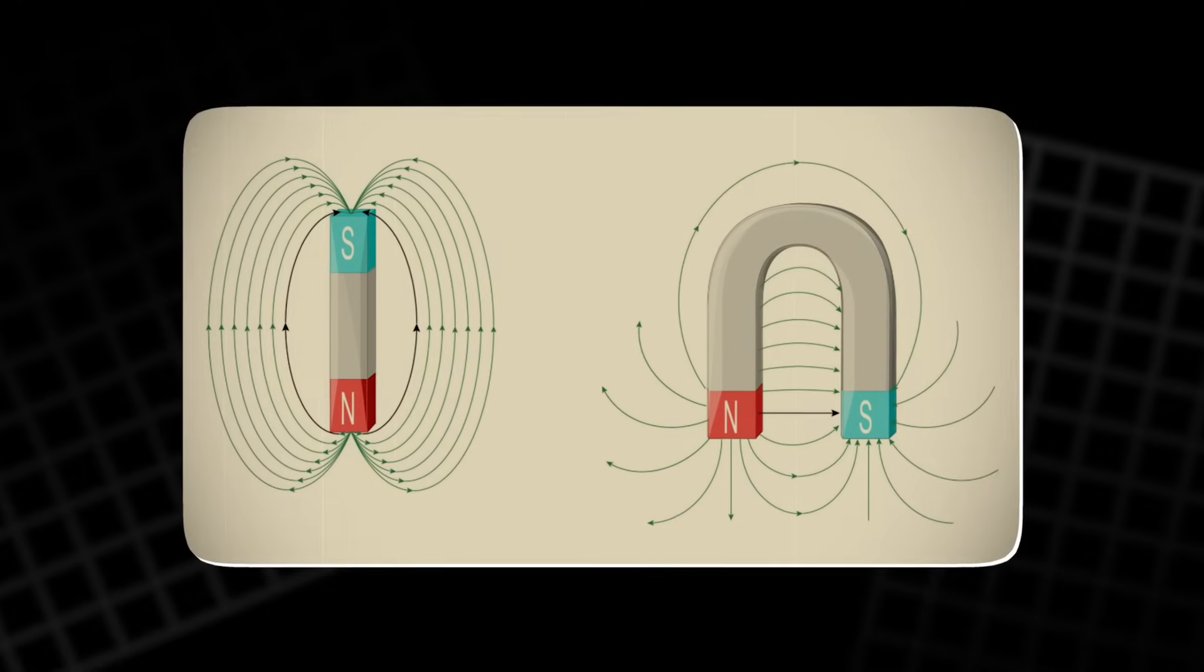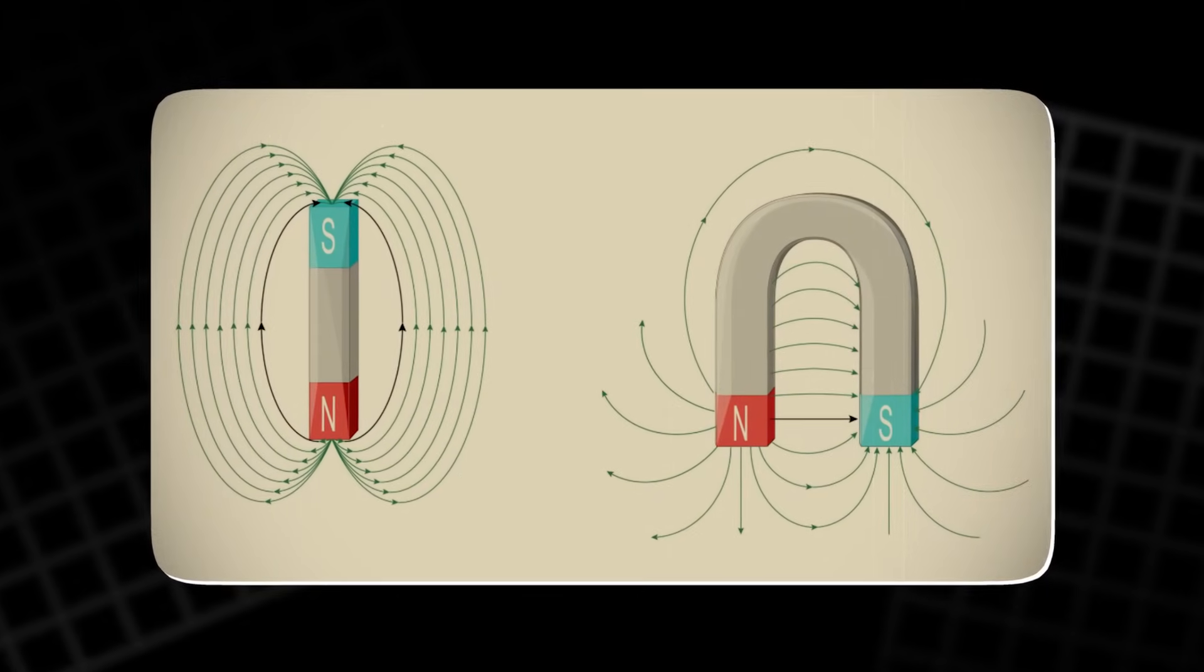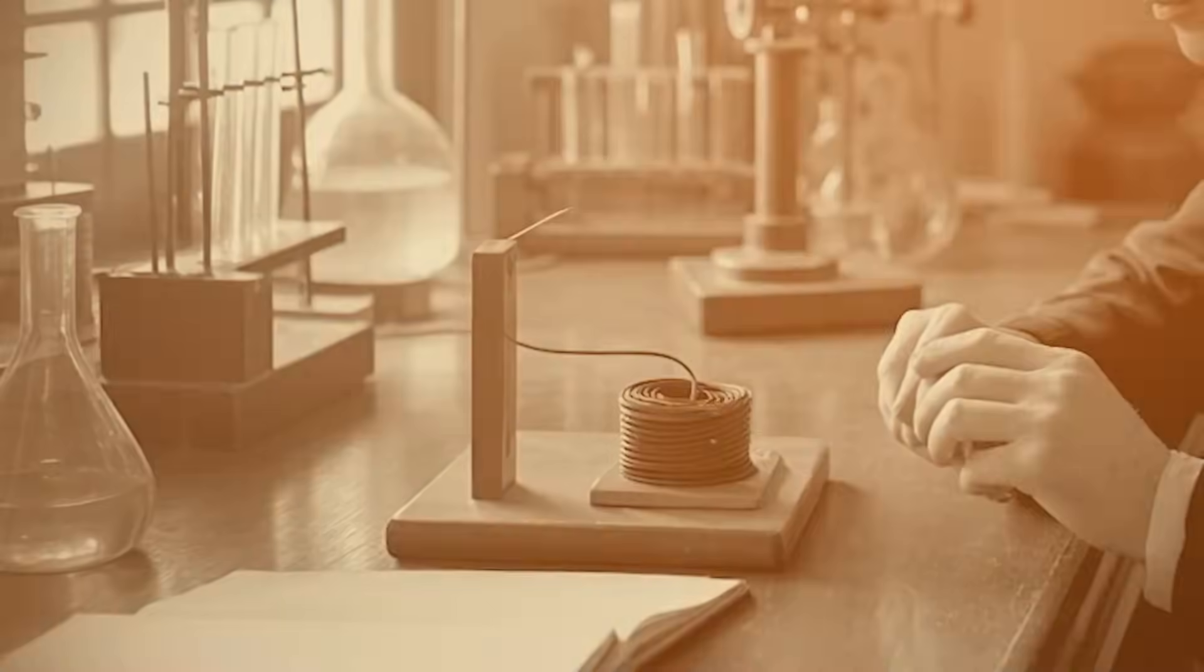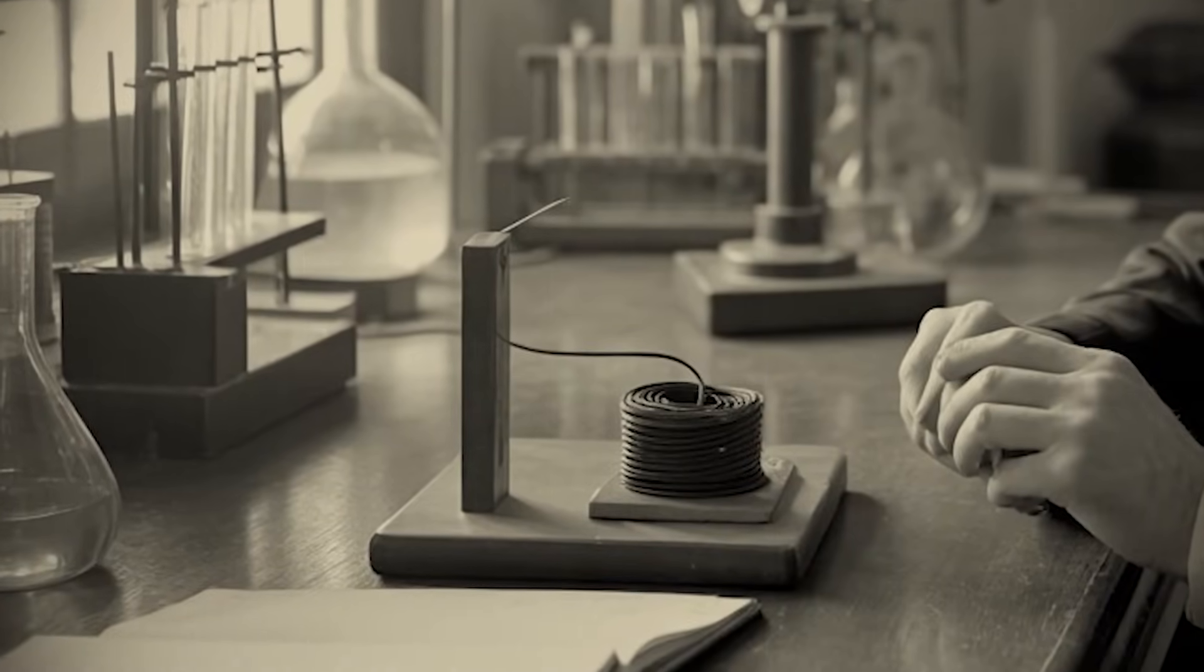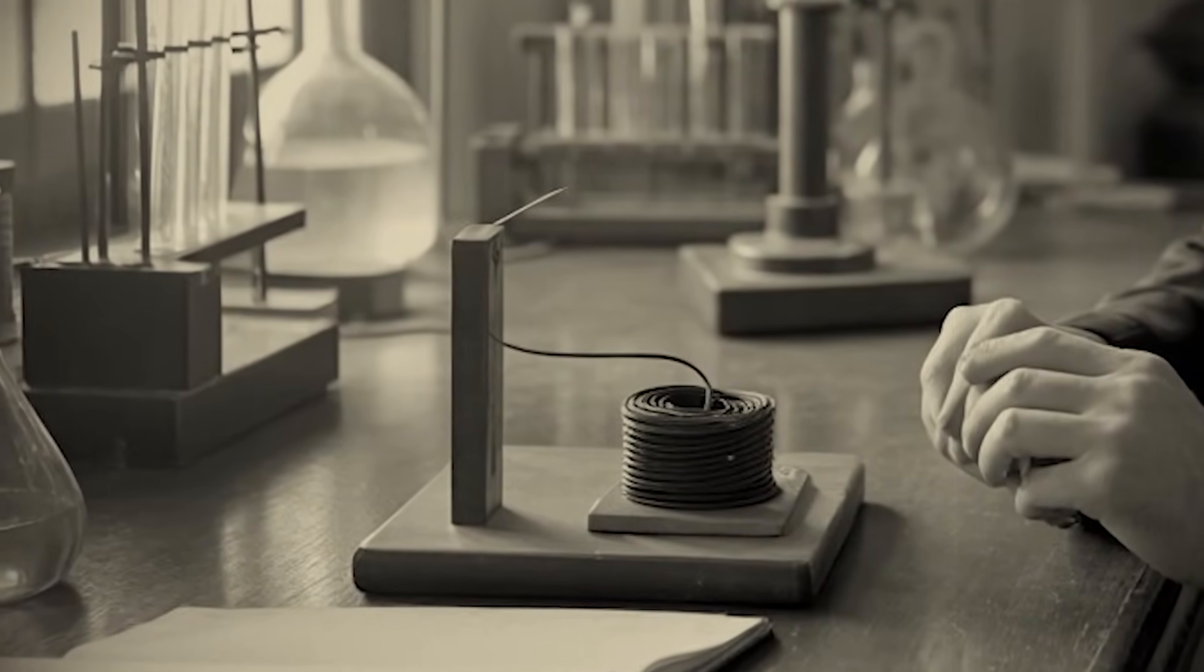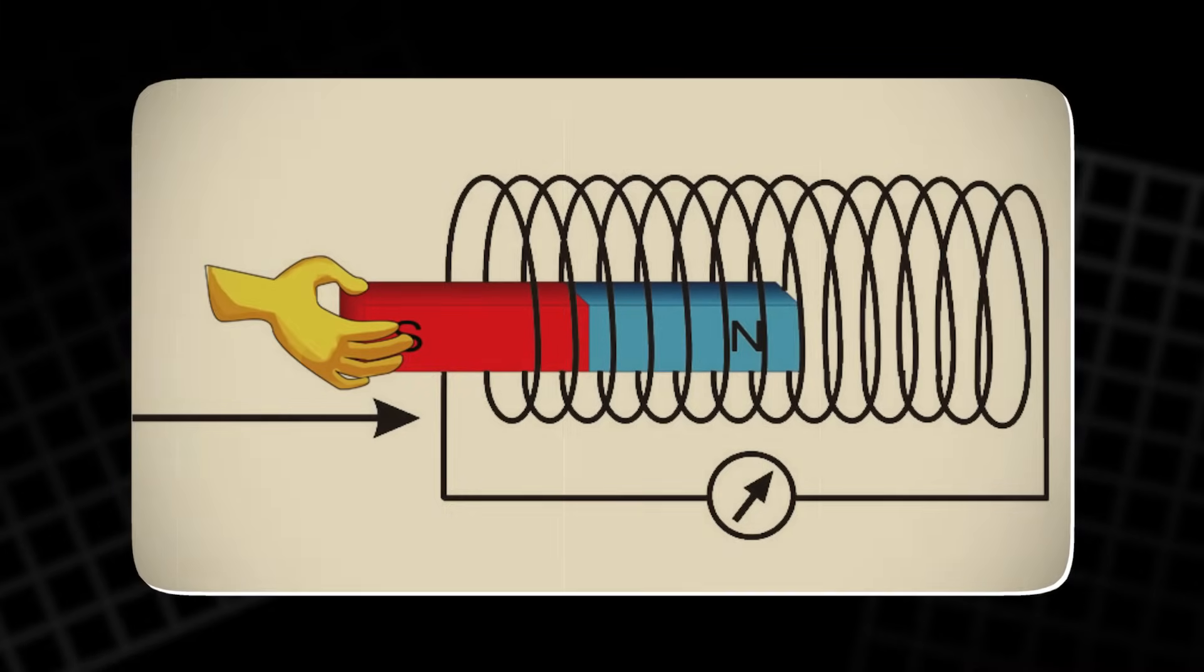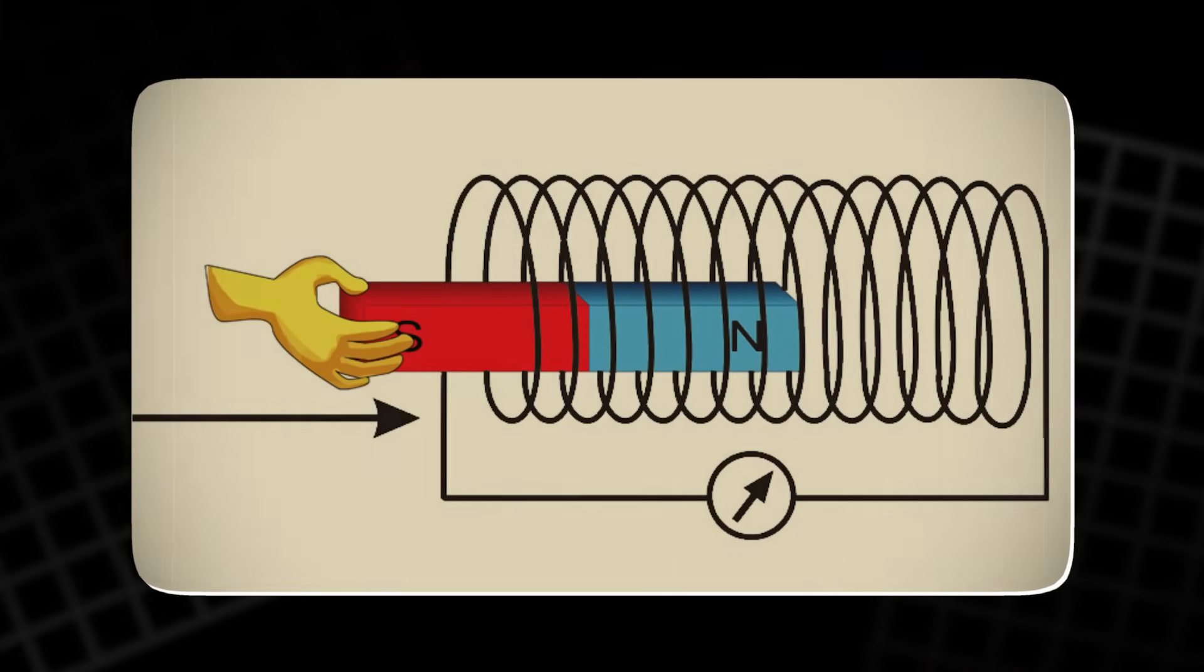Was this energy being generated from within the magnet? Or was it coming from somewhere else? Faraday's inability to answer this question, despite his groundbreaking work, would become one of the central riddles in the study of electromagnetism.